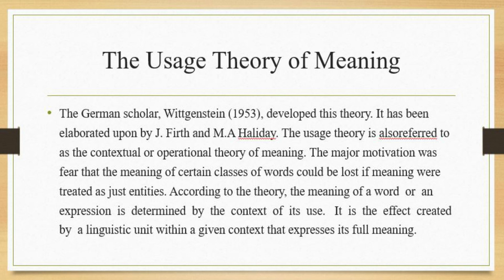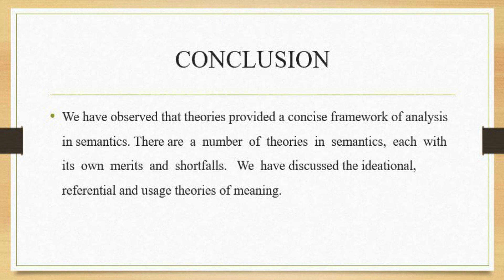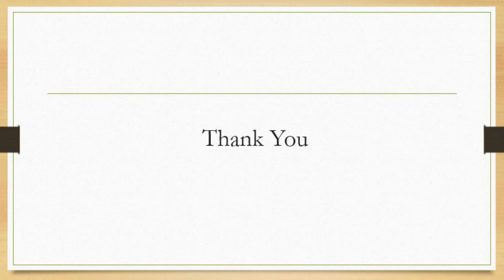The usage theory — the last of the three — was developed by the German philosopher Wittgenstein and has been elaborated by Firth and Halliday. It is also referred to as the contextual or operational theory of meaning. The major motivation was the fear that the meaning of certain classes of words could be lost if meaning were treated as just entities. According to the theory, the meaning of a word or expression is determined by the context where it is used; it is the effect created by the linguistic unit within a given context that expresses its full meaning.